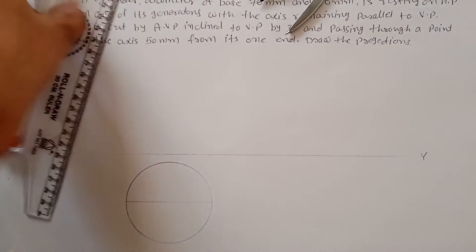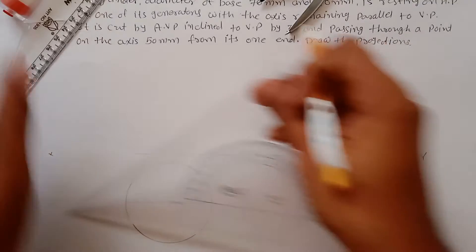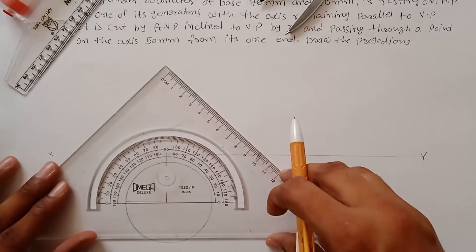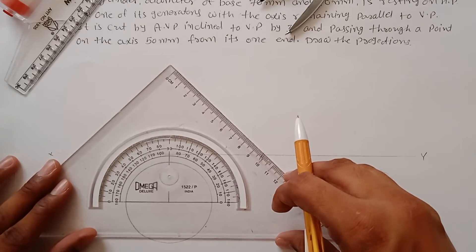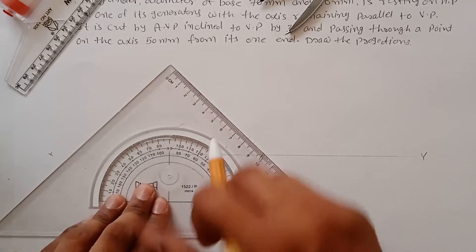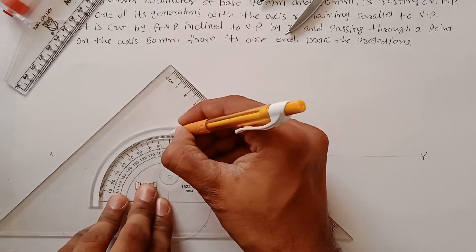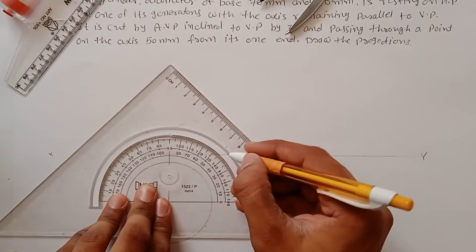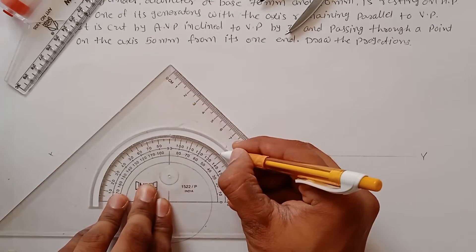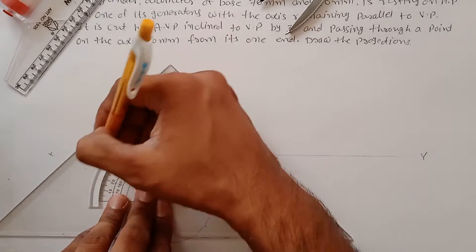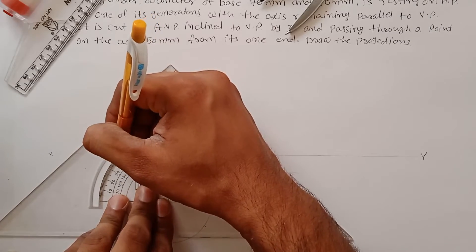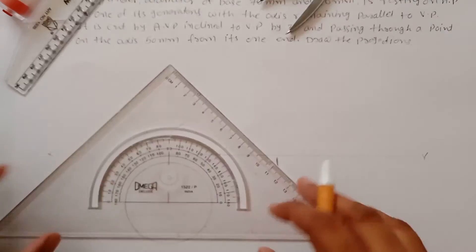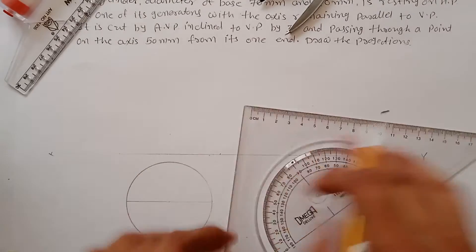Divide the circle into eight equal parts. To do this, draw horizontal and vertical lines, then measure 45 degree angles to get all eight equal divisions.